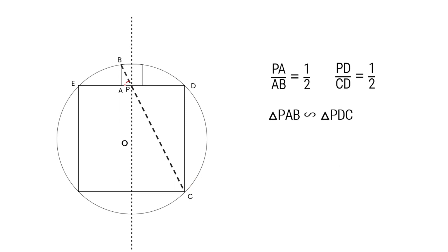We get angle APB and angle CPD are equal. So angle BPC equals 180 degrees. Three points P, B, and C are collinear.